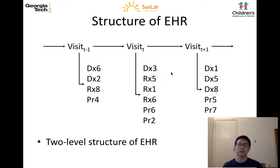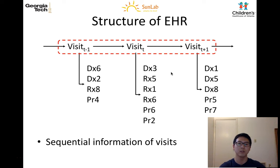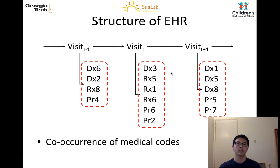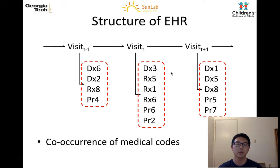Let's look at the structure of the electronic health records. They have a two-level structure, where the first is sequential information of visits, and the second is the co-occurrence information provided by the medical codes happening within the visit.